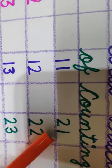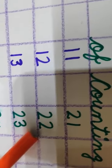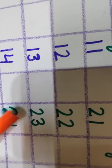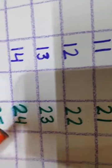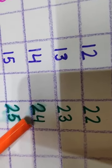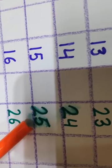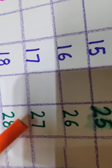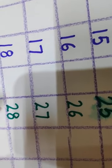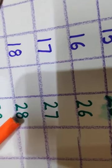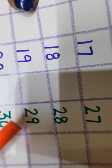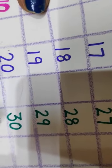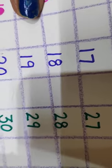2, 1, 21. 2, 2, 22. 2, 3, 23. 2, 4, 24. 2, 5, 25. 2, 6, 26. 2, 7, 27. 2, 8, 28. 3, 0, 30.